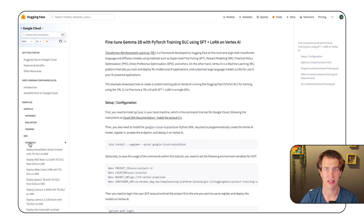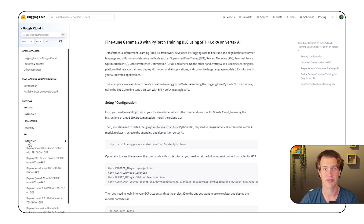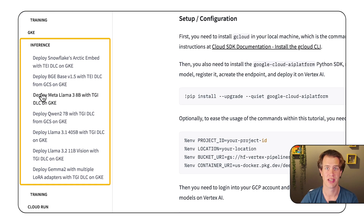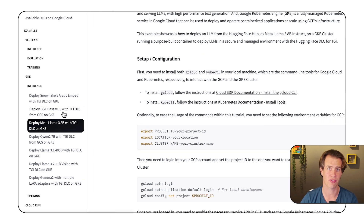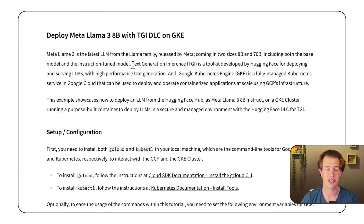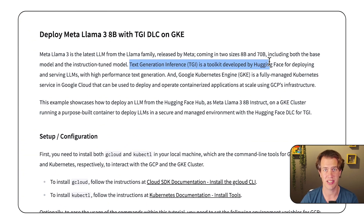The PyTorch container is also the most flexible option for inference. However, if you want to take an existing model to create a high-performance inference API, consider using either the TGI or TEI container.